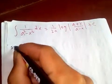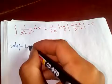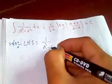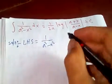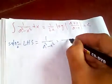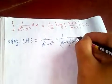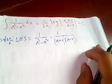Taking the left-hand side, let's simplify this. First, I can factor the denominator: a² - x² equals (a+x)(a-x), using the difference of two squares formula.